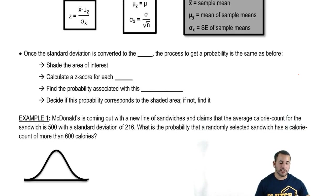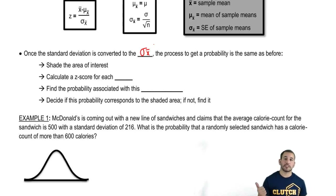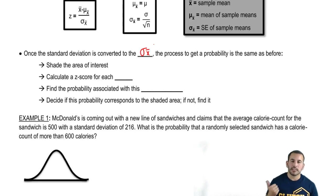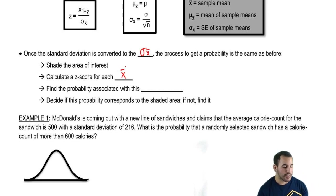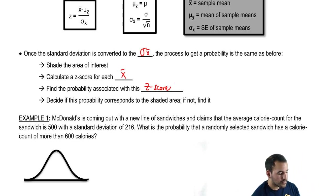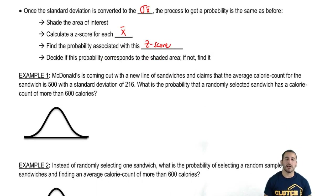Once the standard deviation is converted to the standard error for the means, the process to get a probability is the same as before. First, shade the area of interest. Then calculate a z-score for each individual sample mean. Find the probability associated with that z-score. Finally, decide if that probability corresponds to the shaded area, and if not, work your way to find the answer.